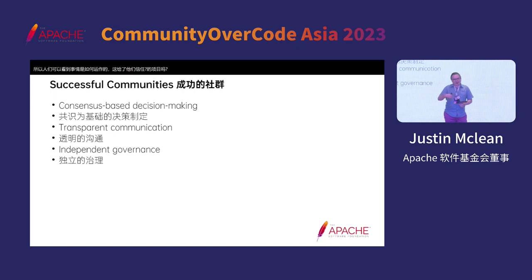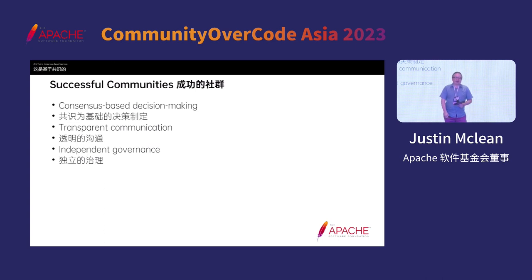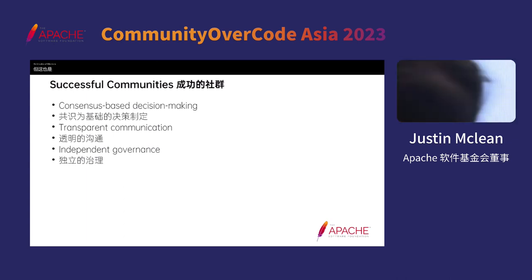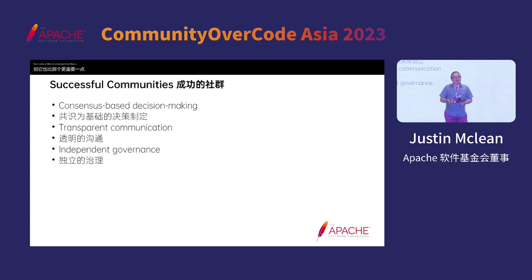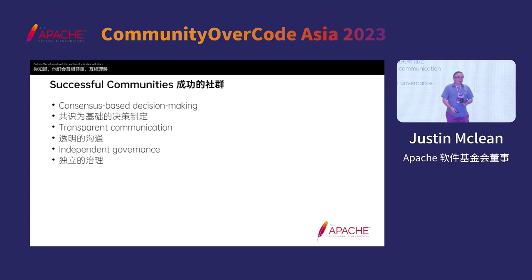If you take all those values as a whole, there are three main things that fall out from that. The first is consensus-based decision making — working out what is the best way forward for the project as a whole. But it's also more important than that: by discussing issues and working out solutions, it builds trust among people in the community. They will respect each other and understand each other's points of view — they may not agree, but they can work together in a constructive way.